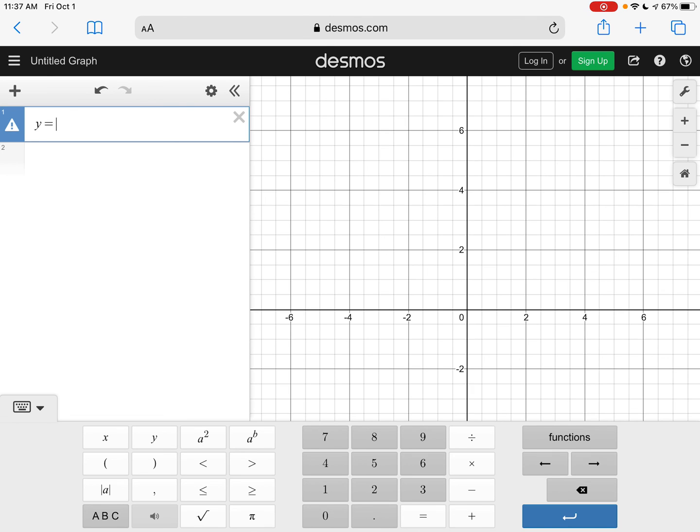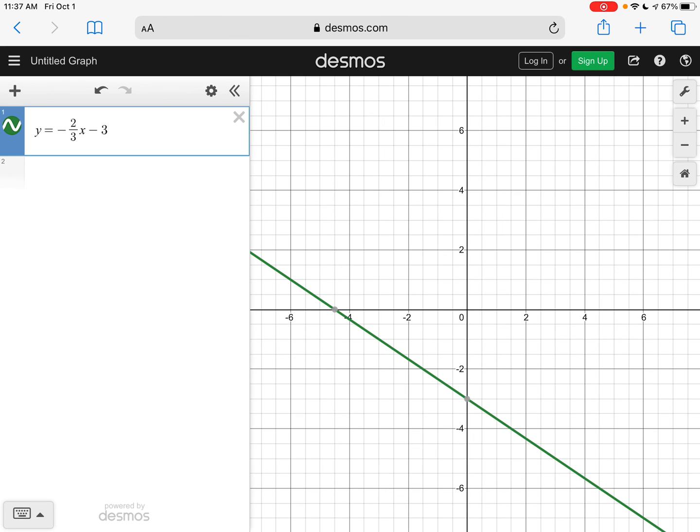The next one we graphed was y equals negative two-thirds. To do a fraction you just do two divided by, and see how it automatically makes it a fraction three. Then you want to use the arrow over to get out from underneath the denominator, and then x minus three. So here is that equation.